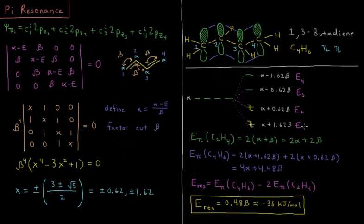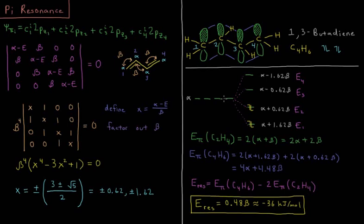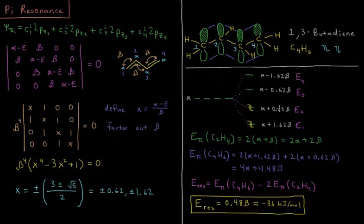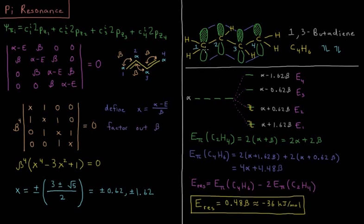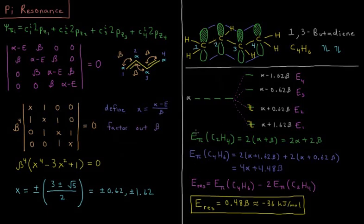We'll remind ourselves that beta empirically comes out to be about minus 75 kilojoules per mole. So this one is 100 and something below the zero, and this one is going to be probably around 40 something kilojoules below zero. Now the question is, what is the energy of this system relative to something that isn't conjugated?